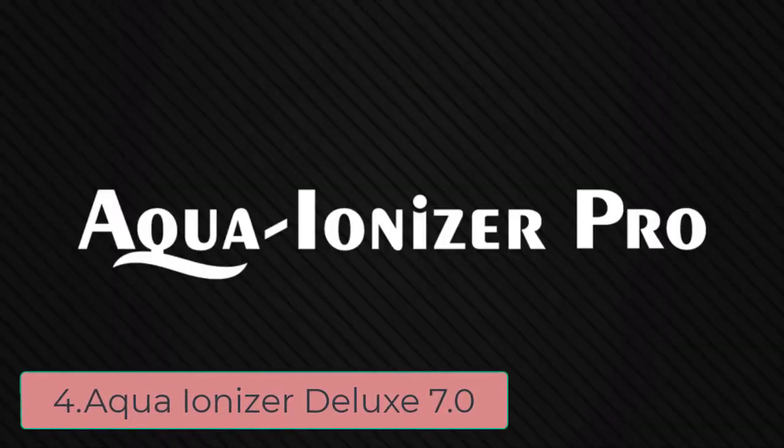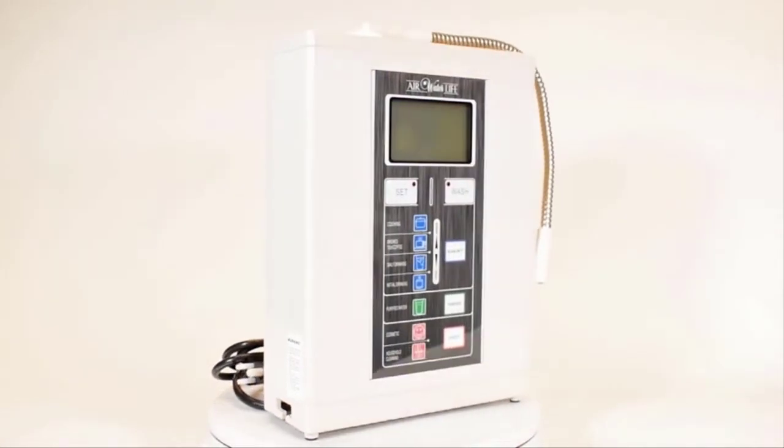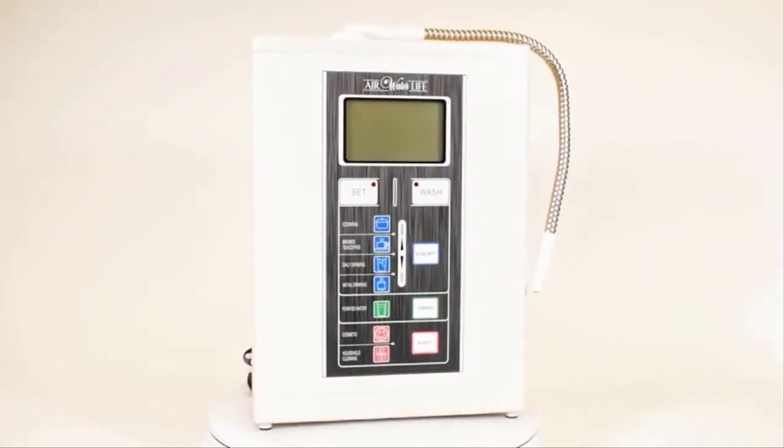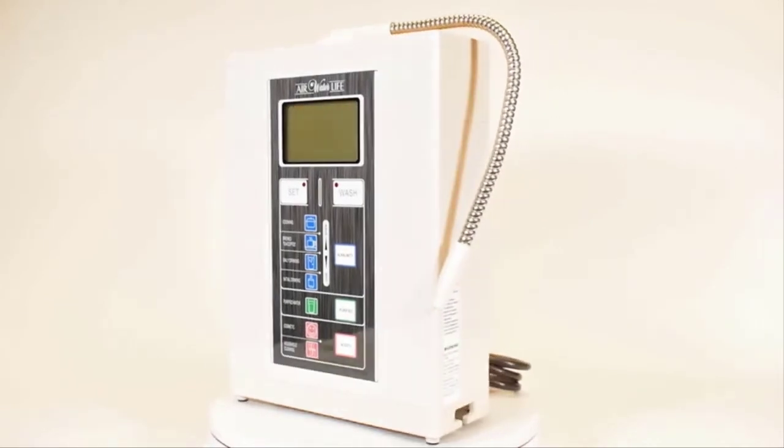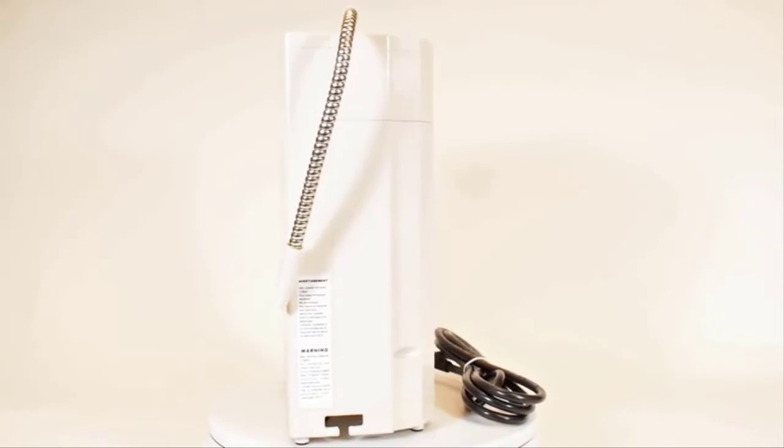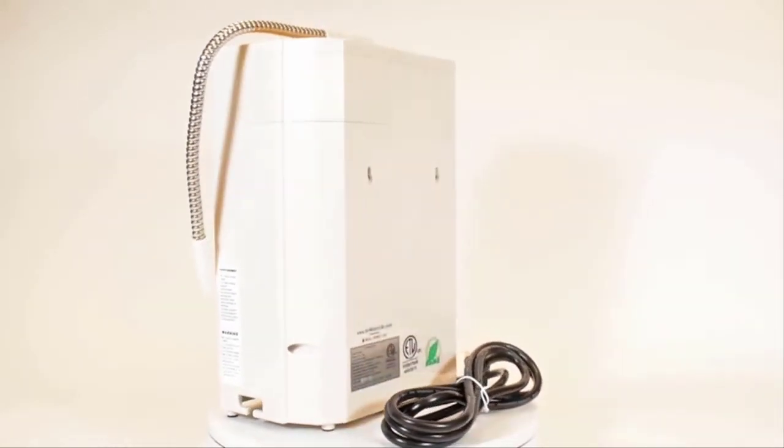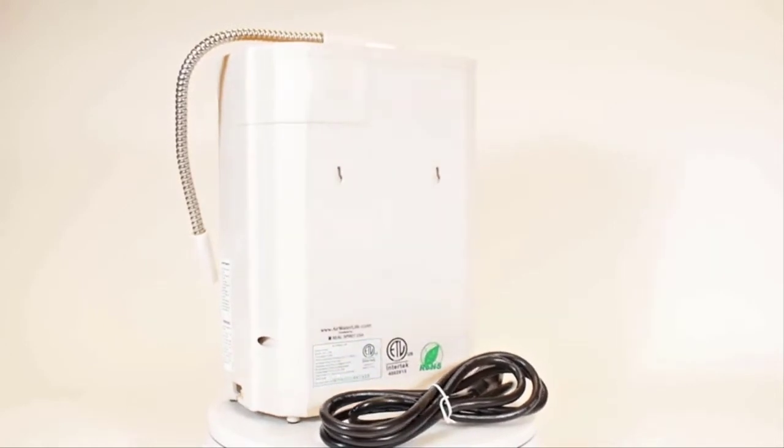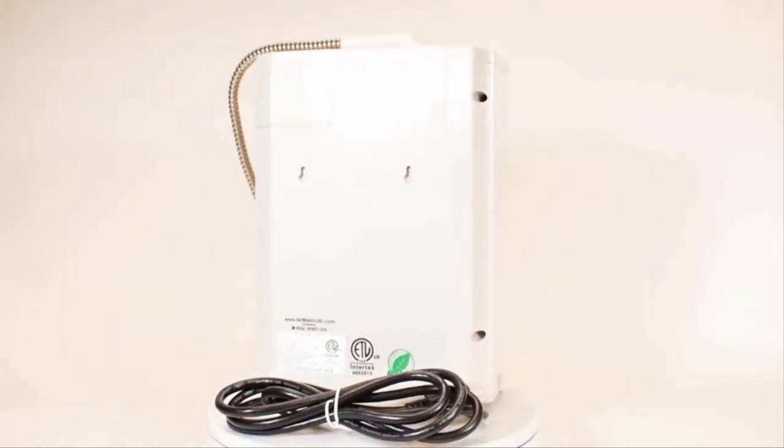At number four, Aqua Ionizer Deluxe 7.0. The Aqua Ionizer Deluxe 7.0 features seven electroplates to provide you with clean alkalized water. This water ionizer features seven settings for drinking, cooking, cosmetic, and cleaning purposes. With the Aqua Ionizer Deluxe 7.0, you can cut down on plastic waste and save money. Not only does this aqua ionizer provide you with all these benefits, but it gives you full control over your water.